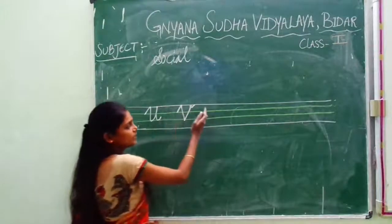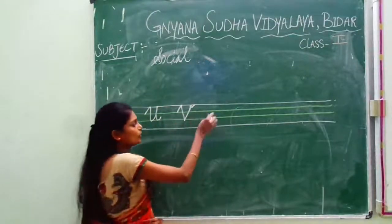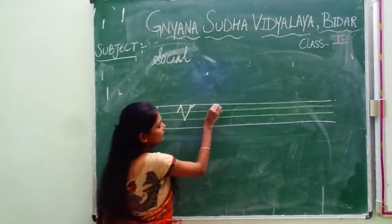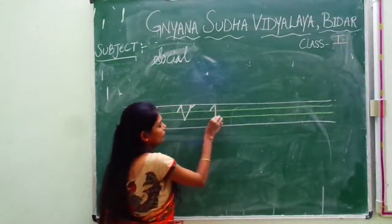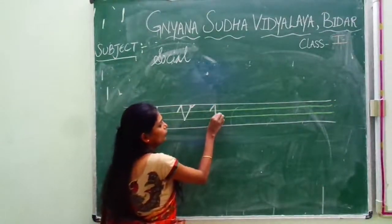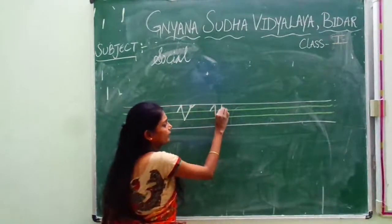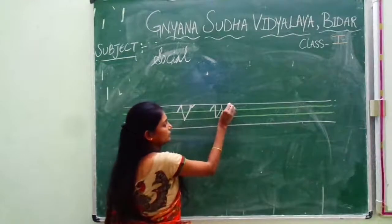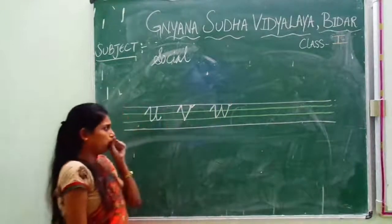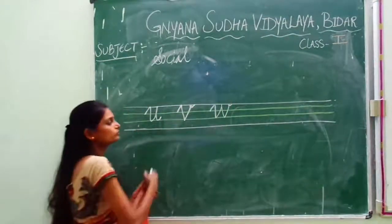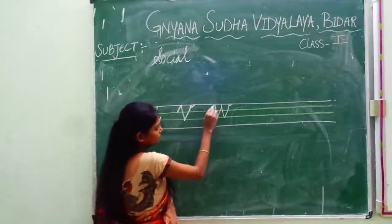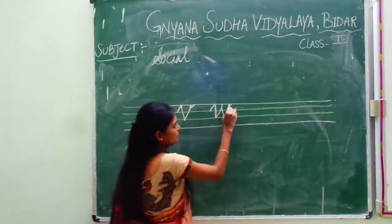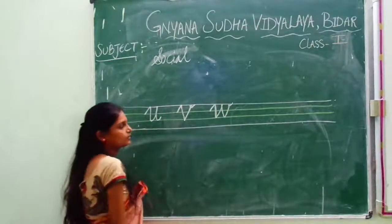Now leave some space, then write W. How to write W? See here — one slanting line, again come down, again go up and touch pink line, again come down and touch blue line, again go up. This is called W. See once again I am showing you — W, same as U and V. So U, V, W.